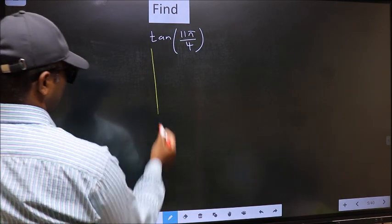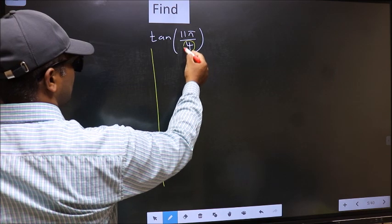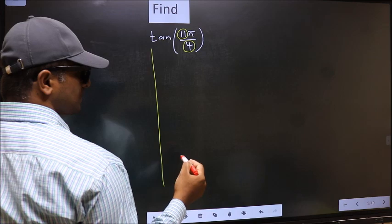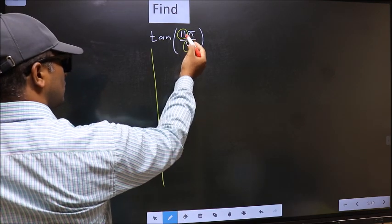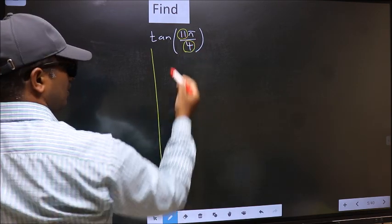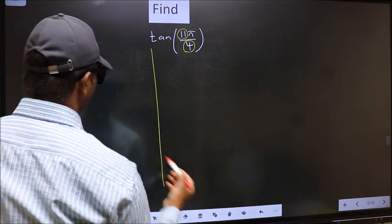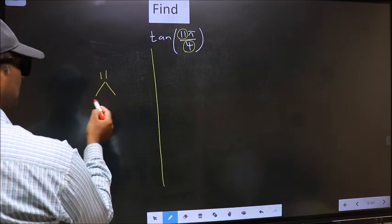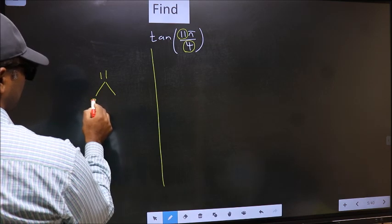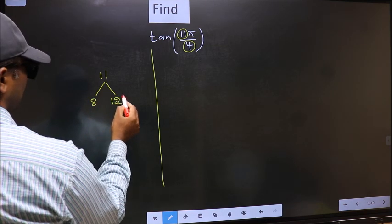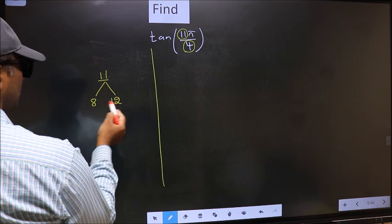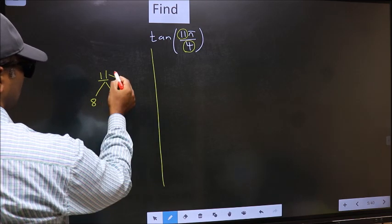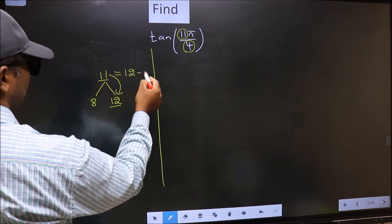in the denominator we have 4 and in the numerator we have 11. Now you should check 11 is close to which multiple of 4. What I mean is, 11, and here you write multiples of 4, that is 8 and 12. Now 11 is close to which number? This is close to 12. So now 11 should be written as 12 minus 1.